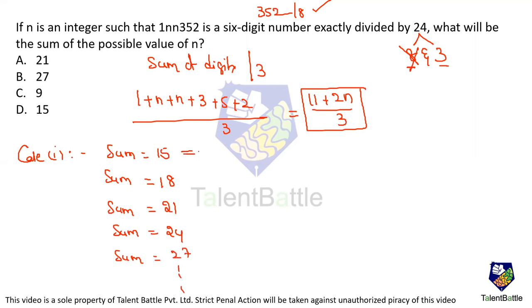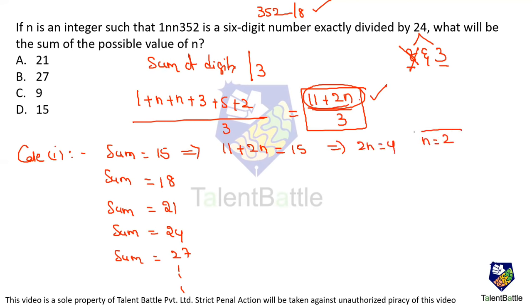Let's check. First, if I equate the sum to 15: 11 plus 2n should equal 15. Then only this will be divisible by 3. So 11 plus 2n equals 15 implies 2n equals 4, so n equals 2. I got n as 2, and this is a possible case.